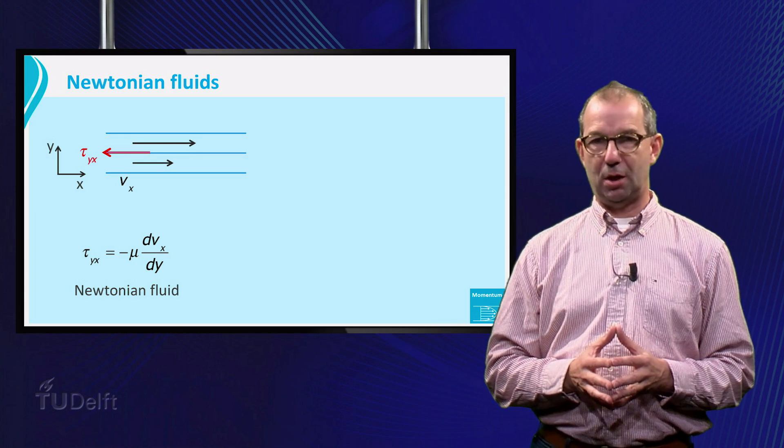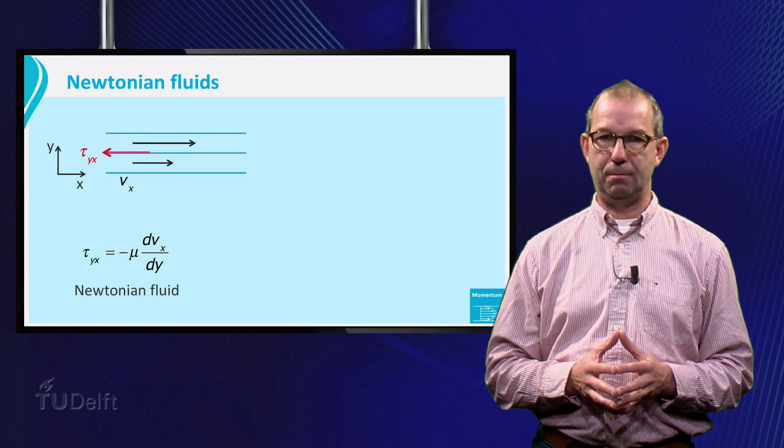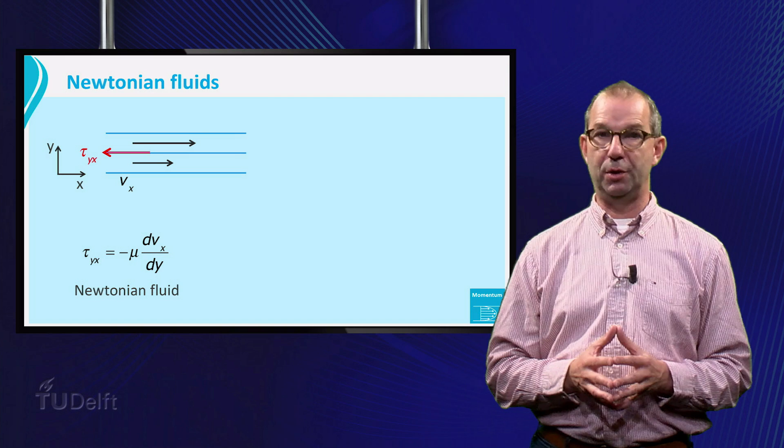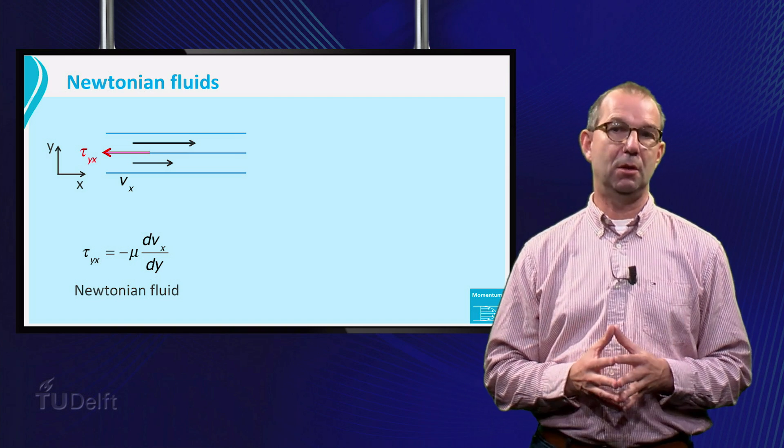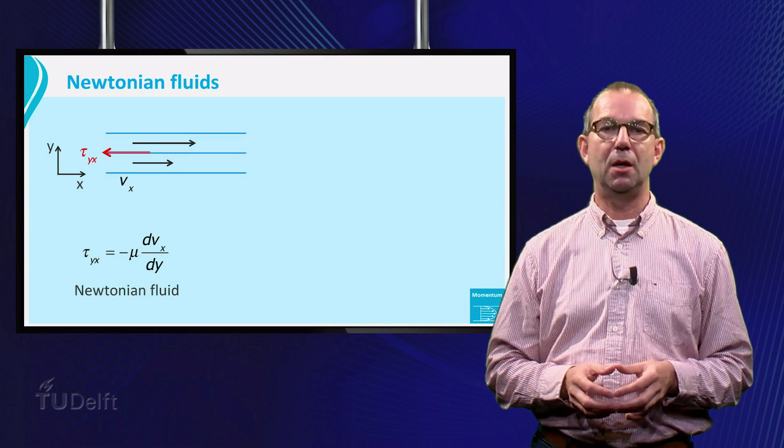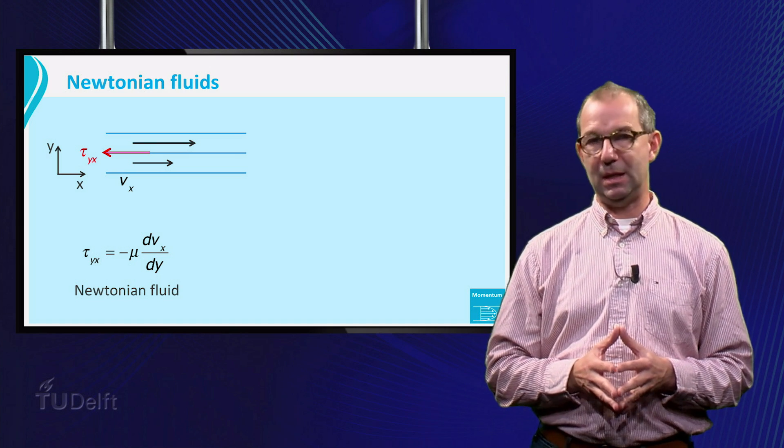Fluids with such a relation are called Newtonian fluids. Many fluids are Newtonian, but also many are not. For instance, toothpaste or blood are non-Newtonian fluids. We will deal with them in the next lecture.